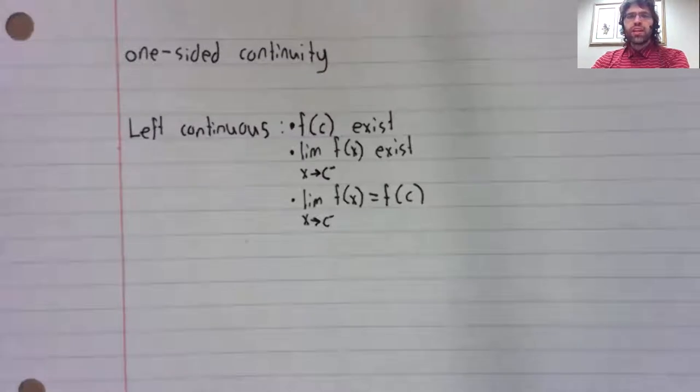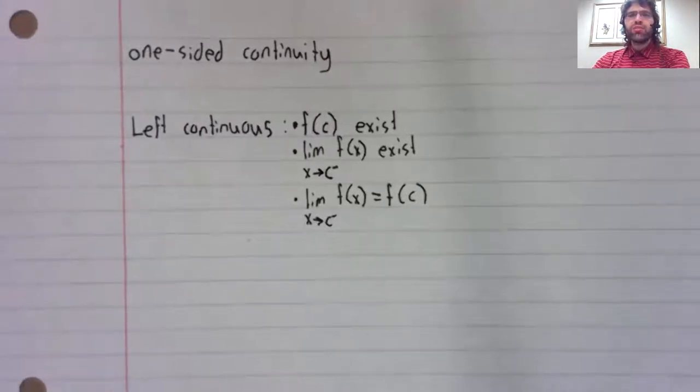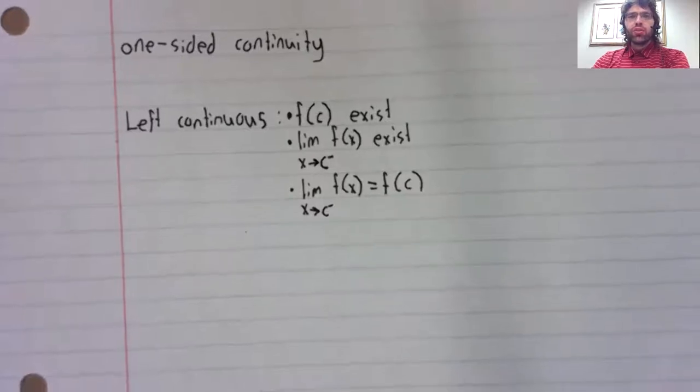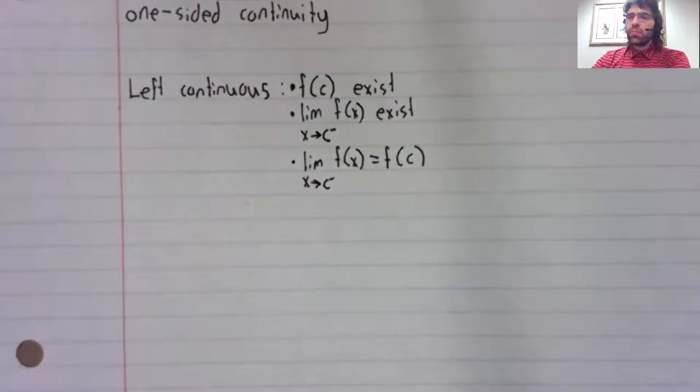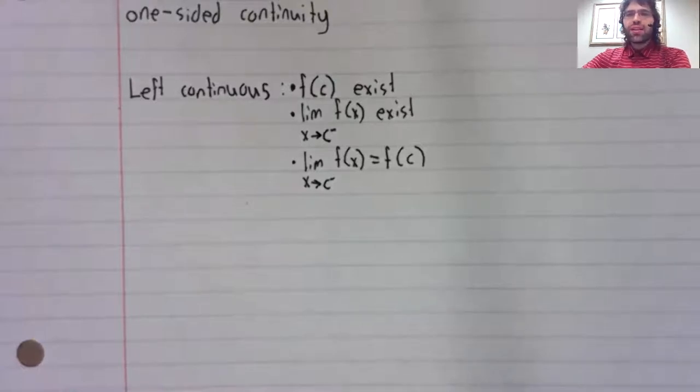We could define one-sided continuity in terms of one-sided limits. For example, if you replace the limits with left-hand limits, you get left continuity. Right continuity is defined similarly. Don't worry too much about these definitions though. We are going to use them exactly once in this course, and that time is right now.